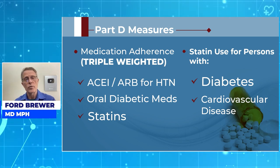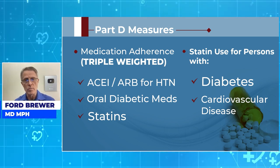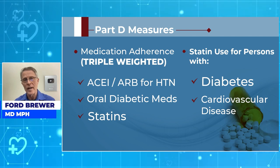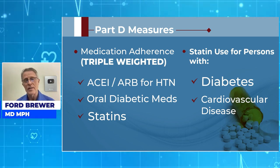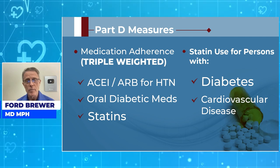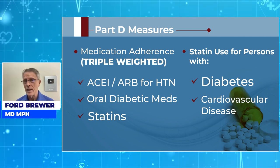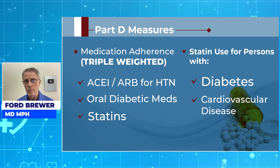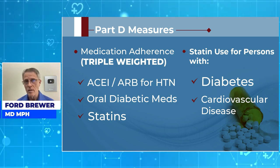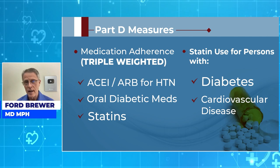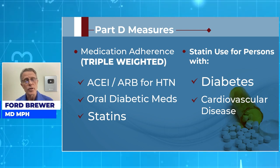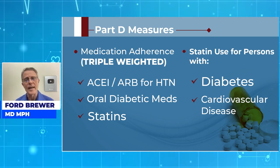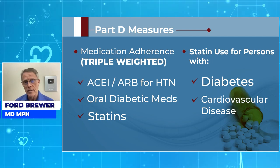Part D covers drugs, and there are significant measures in this group. Medication adherence is triple weighted — you're scored by how well your patients take their medications according to recommendation. You're being compared to everybody else, and if somebody spends the time and engages that patient, they're going to have better medication adherence scores. The specific medications include ACE inhibitors and ARBs for hypertension, oral diabetic meds, statins, and statin use for persons with diabetes and cardiovascular disease.